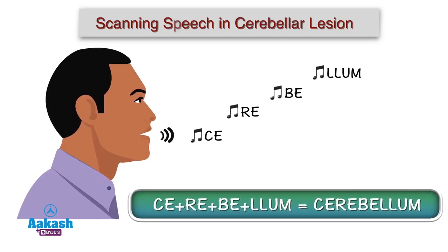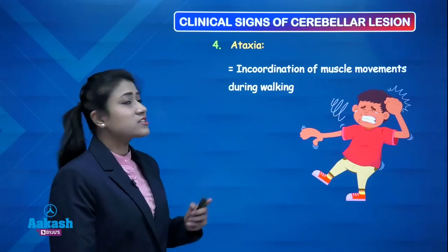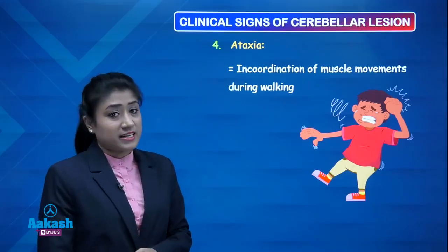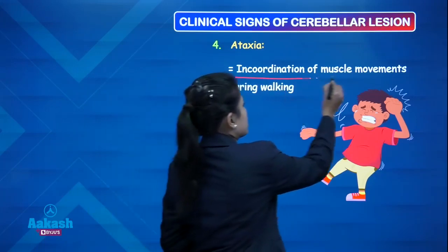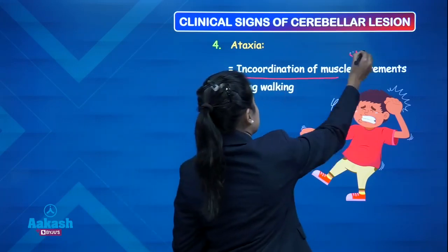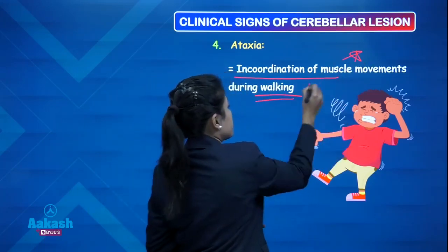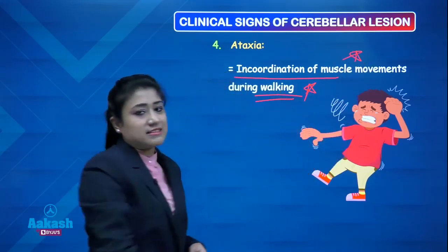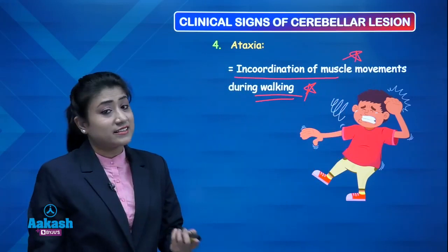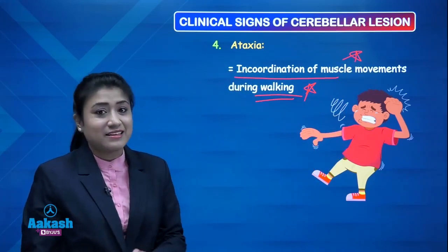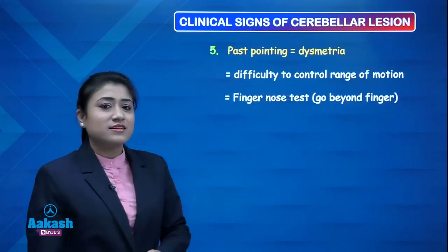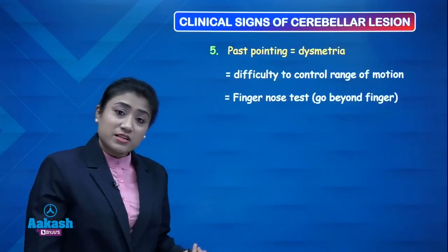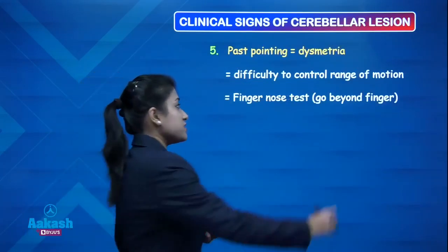The next clinical sign is ataxia, where there is incoordination of muscle movement during walking. Ataxia is again a clinical sign of cerebellar lesion.